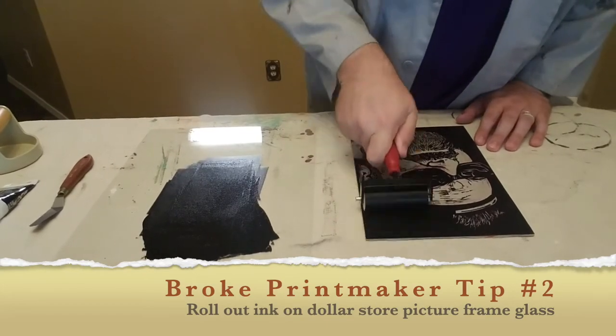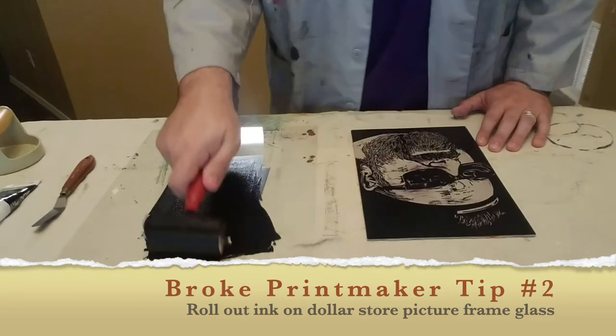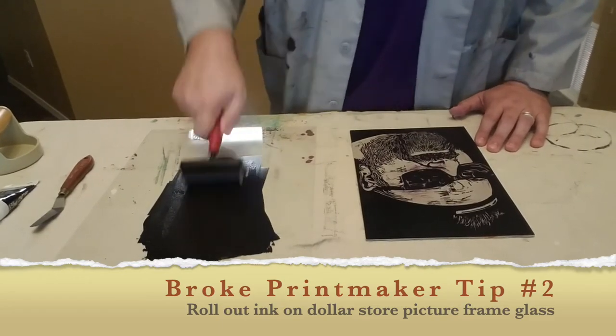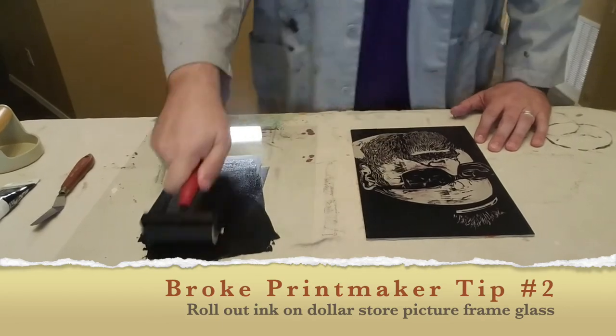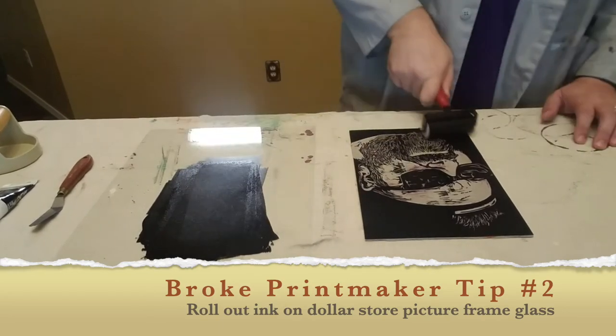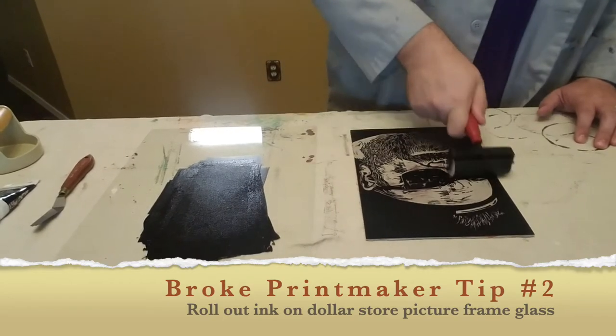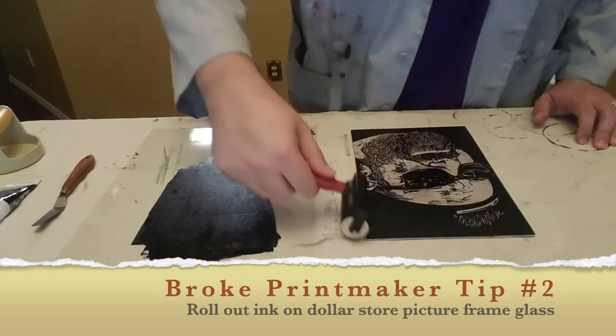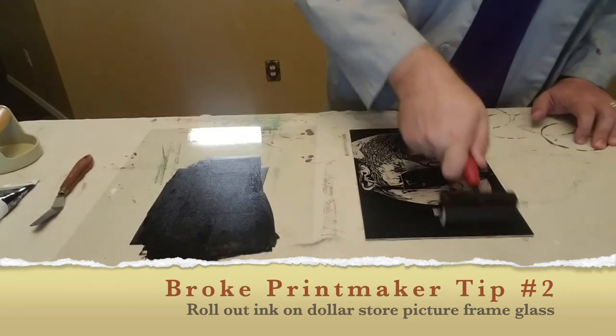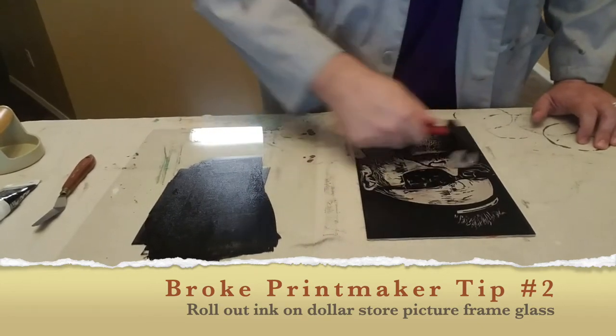Okay, it's time for broke printmaker tip number two. If you don't have anything to roll your ink out on, you can do what I did in this case and grab an 11 by 14 picture frame at Dollar Tree and take the glass out of it. It worked great because I have a canvas drop cloth underneath it so it didn't shift around very much, but be careful. It is really thin but it cleaned up really easily and you can put it back in the plastic frame to use again. And if it breaks, who cares? It only costs a buck.